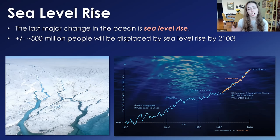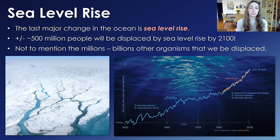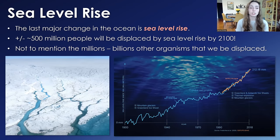The take-home message is that many people will be heavily affected by sea level rise — not to mention the millions to billions of other organisms that will also be displaced, which we tend not to think about but is really important. A video is coming relatively soon about the Sixth mass extinction, what organisms are being heavily affected by climate change, sea level rise, and other factors occurring due to climate change, and essentially how humans are impacting humans.